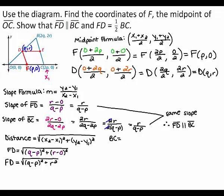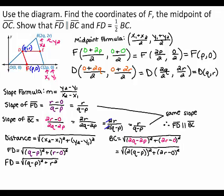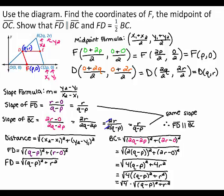To find the length of segment BC, let x1 equal 2p, y1 equal 0, x2 equal 2q, and y2 equal 2r. You can substitute these values into the distance formula. To simplify, you can first factor out a 2 from each term in the quantity 2q minus 2p. Next, 2 times the quantity (q minus p) squared gives you 4 times (q minus p) squared, and 2r minus 0 quantity squared gives you 4r squared. Notice that both terms inside the radical have a factor of 4, so you can factor out a 4 from each term. You can rewrite this as the square root of 4 times the square root of the quantity (q minus p) squared plus r squared, and the square root of 4 is 2. So, the length of segment BC is equal to 2 times the square root of the quantity (q minus p) squared plus r squared.